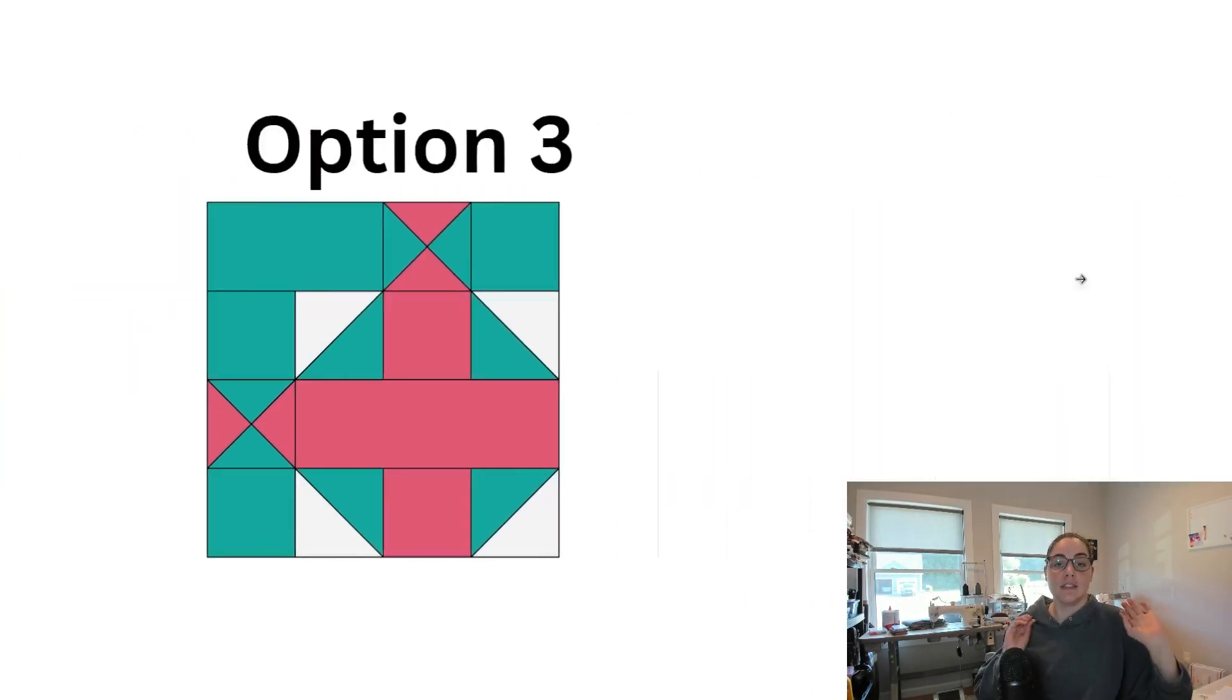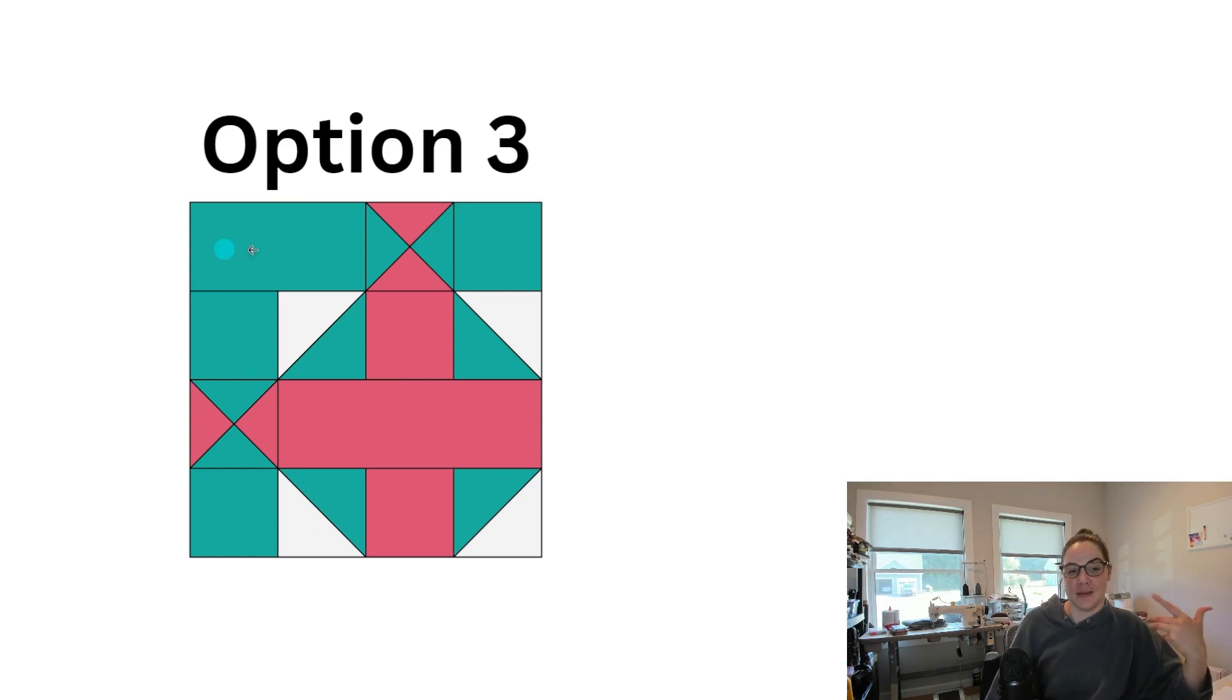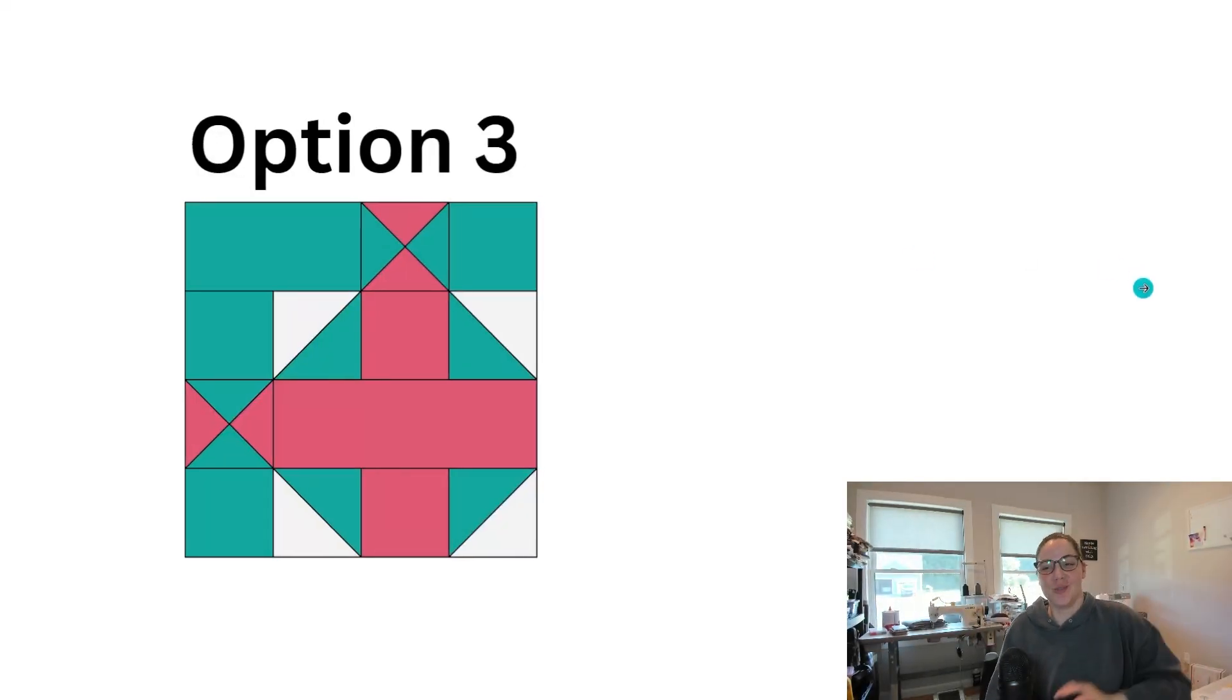All righty, let's look at option number three. So this one's starting to get a little wacky. We've basically cut part of the block out. This is an attempt to keep those green plus signs whole rather than cutting them down the middle like you saw before. You're basically going to take rectangles, HSTs like we had before, but now the points of my pink pluses are being formed by QSTs rather than stitch and flip corners. Again, up to you to decide if that's good or not, but this is one way of doing it.